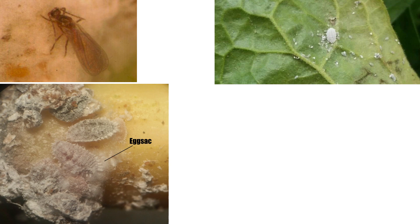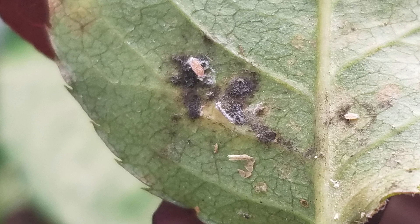Like many phloem feeders, the female citrus mealybug exudes honeydew as a byproduct of their feeding behavior, which will drop to a lower part of the plant. Honeydew is a substrate for sooty molds in the order Capnodiales, and its presence is often an indication of nearby mealybugs or other honeydew-producing insects like aphids and whiteflies. Sooty molds associated with honeydew reduce the rate of photosynthesis of plant tissues on which they exist, but are not directly pathogenic like some related species.